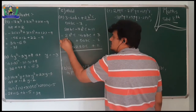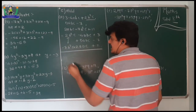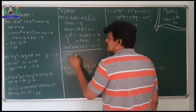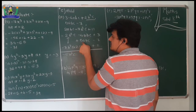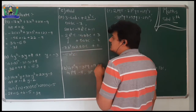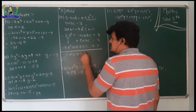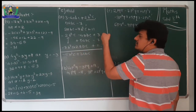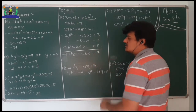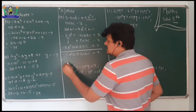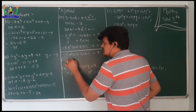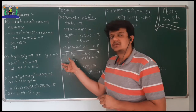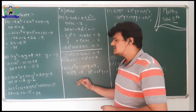Now combining like terms vertically: 2b²c and minus 7b²c gives minus 5b²c. For the abc terms: minus 4abc plus 5abc gives plus abc. The constant terms give plus 3 plus 11 equals plus 14. So the final answer is minus 5b²c plus abc plus 14.